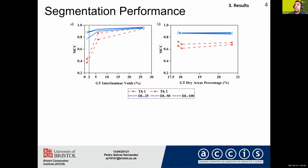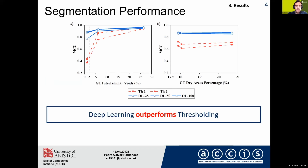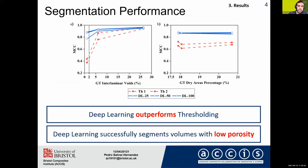Finally, I compared the two segmentations. The blue line shows the segmentation provided by deep learning, and the red line is the one provided by thresholding. Deep learning really outperforms thresholding for both interlaminar voids and dry areas segmentation, and it successfully segments volumes with low porosity where thresholding really fails on the task of segmenting very small volumes.